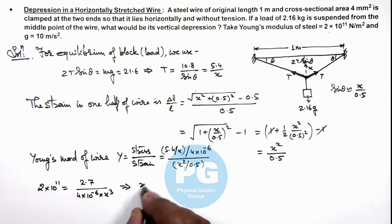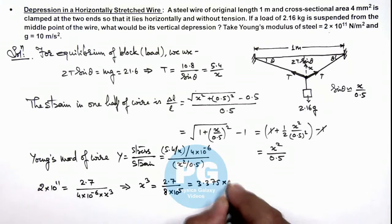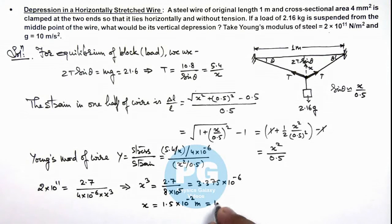Which gives us the value of x cube is equal to this 2.7 upon, and the numerical value is 3.375 into 10 to power minus 6. And on taking cube root of this numerical value, we'll get x is 1.5 into 10 to power minus 2 meter, or it is 1.5 centimeter. That is the result of this problem.